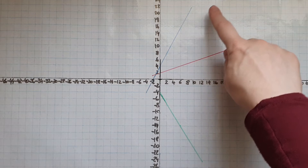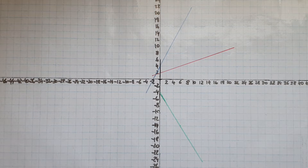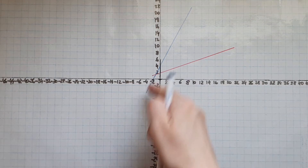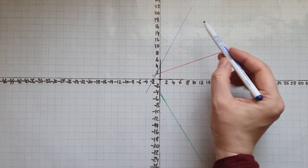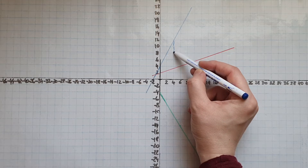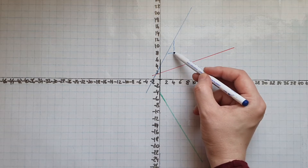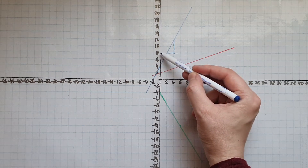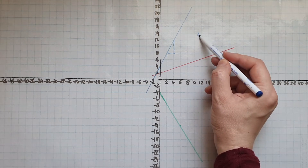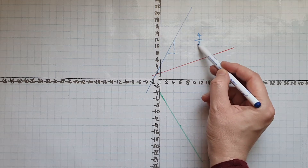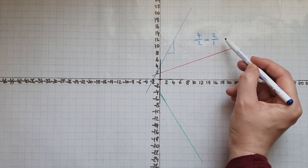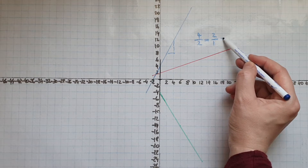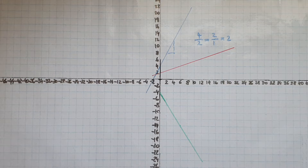Focusing on the blue line, it's going upwards — like uphill. Let's form a triangle. So it's going up by four and across by two. We can simplify this to two over one, and that is equal to two. So the gradient for the blue line is equal to two.